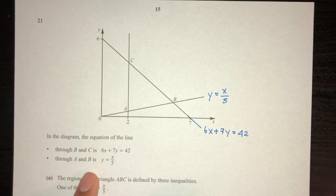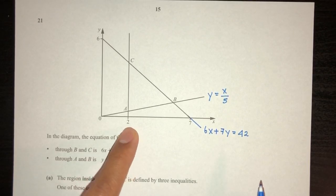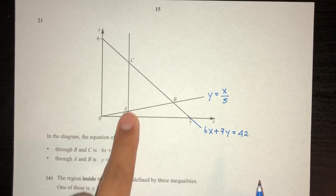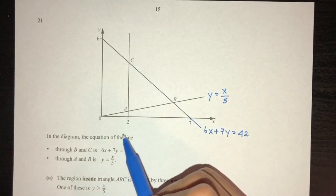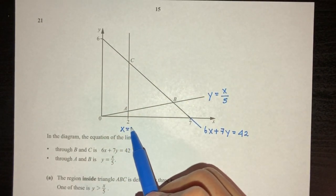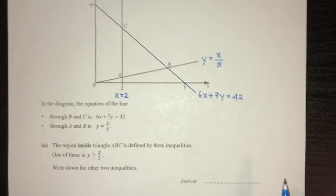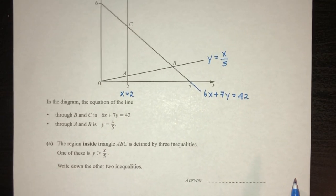We have these two lines given to us, and also this is a vertical line, so its equation has to be x equals 2. Now moving on to part A.